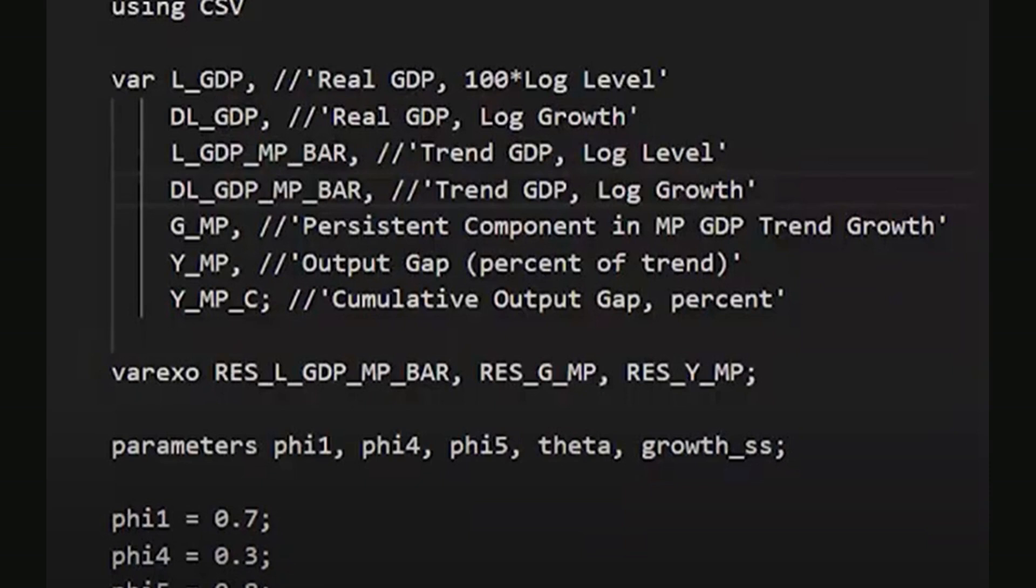The notation MP stands for monetary policy. This is a basic univariate model for estimating monetary policy relevant output gaps, primarily for demonstration purposes. All endogenous variables are listed separated by commas with the last variable Y_MP_C followed by a semicolon to terminate the block.